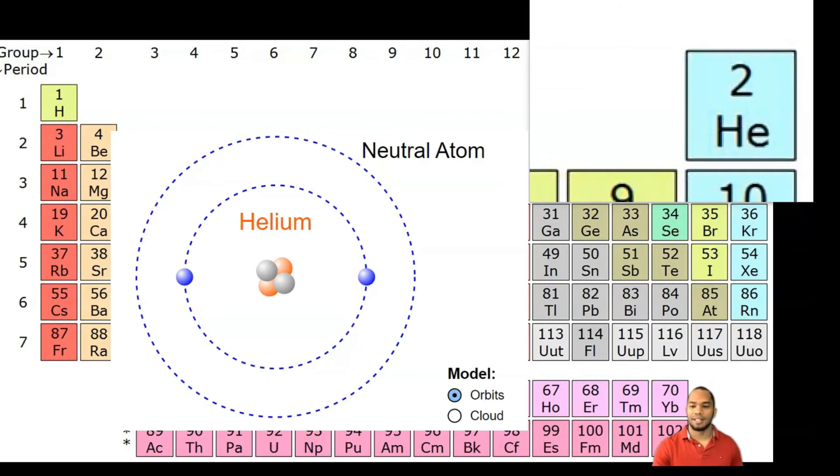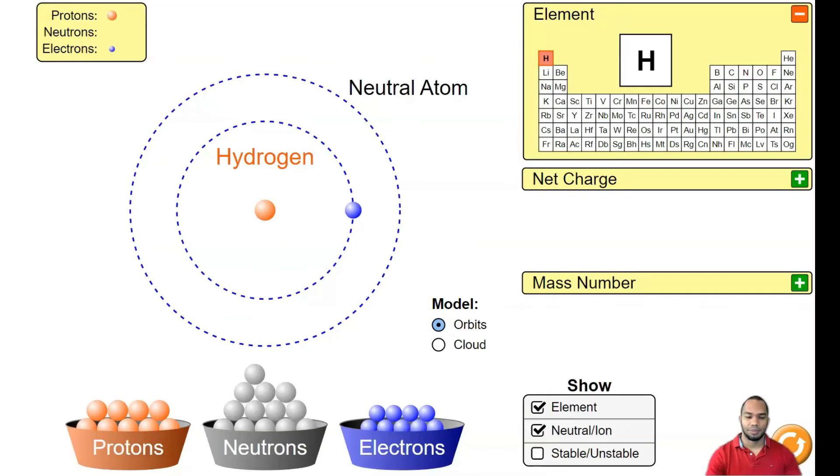complete and doesn't need to add any more electrons. It's the only element that is complete with two. Let's build helium: we have two protons, two neutrons, and we have to balance it out otherwise it would be an ion. Now notice the first shell - if I try to put another electron,